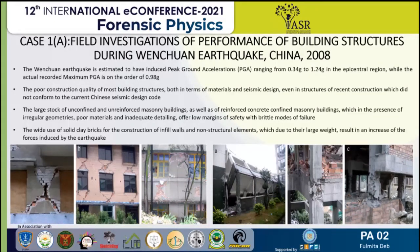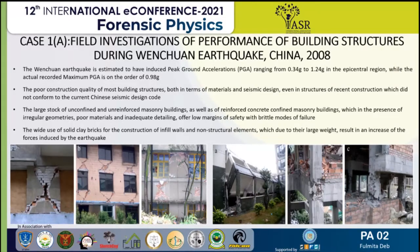A fourth figure shows the rear view of a classroom building, suggesting that collapse started from the ground after failure at the top end of the column. The failure of the beam-column joint was the result of insufficient confinement and shear reinforcement at the joint, irregular geometry in the plan, and the absence of capacity design principles. A large stock of unconfined and unreinforced masonry buildings, as well as RC confined masonry buildings with irregular geometries, poor materials, and inadequate detailing offer low margins of safety with brittle modes of failure. The poor construction quality of most building structures did not conform to the current Chinese seismic design code.